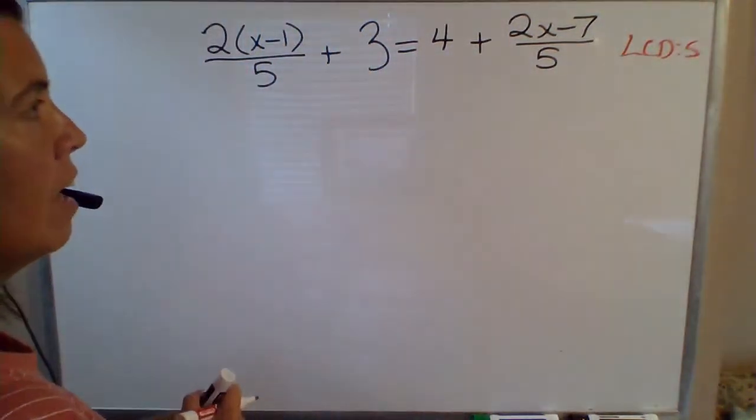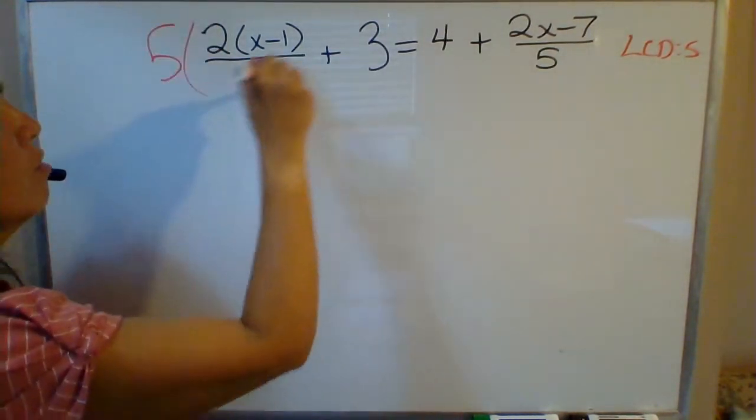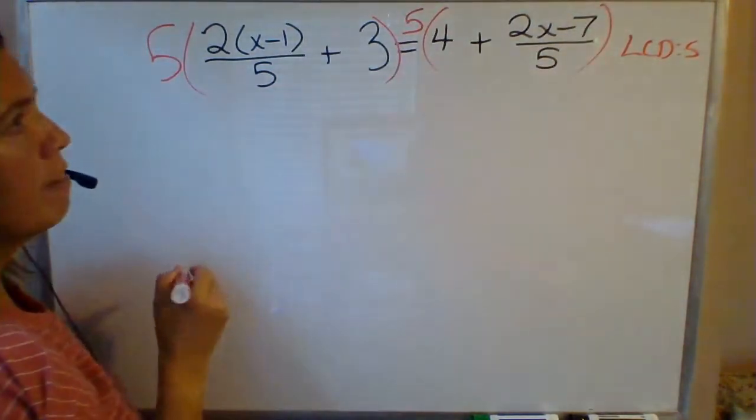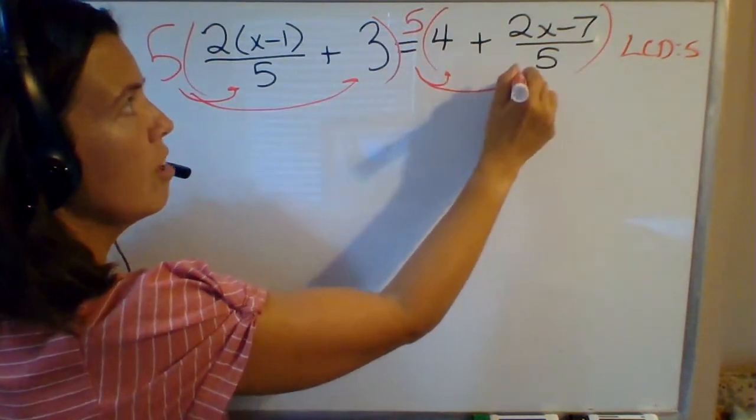I'm going to clear those denominators by multiplying each part. Let me write it this way first: I'm going to multiply both sides of this equation by 5. When I do that I need to distribute that 5 to each part of the sum.